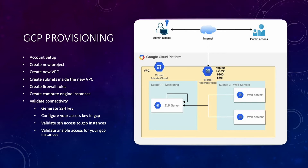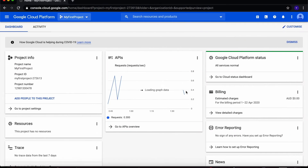Hey guys, let's start provisioning our GCP infrastructure. In this lecture we will create a new project, then we'll create a new VPC with two subnets, and we'll finish off the lecture by creating some firewall rules that allow access from the outside world into our environment. So let's get started. Here I'm in the administrative console.